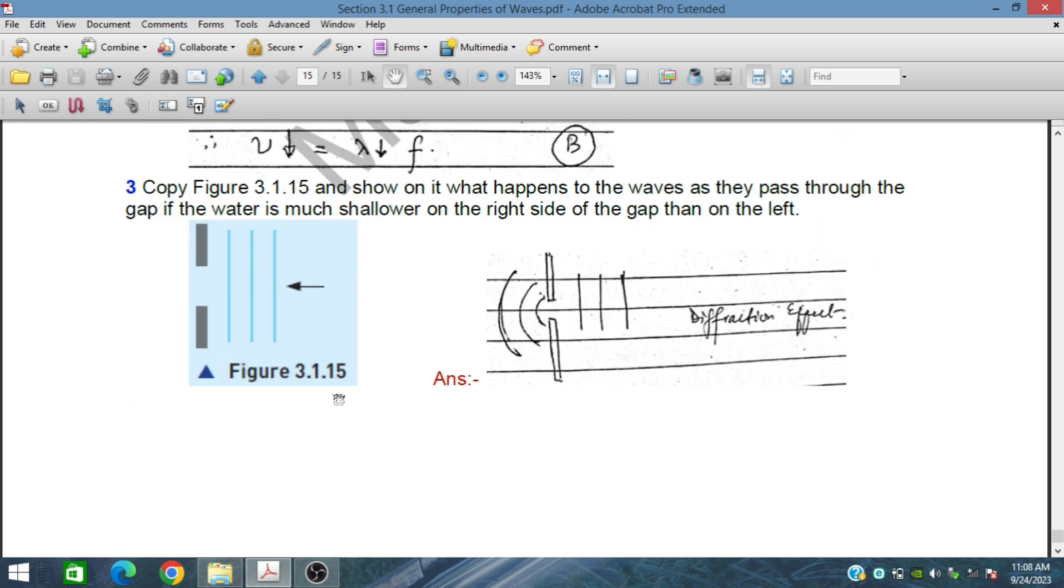In part C, copy figure 3.1.15 and show on it what happens to the waves as they pass through the gap. These are the waves passing through this narrow gap. If the water is much shallower on the right side of the gap than on the left, this side is deeper and this side is shallower. When the waves pass through this gap, they will bend at the edges and we will get this kind of curve here.